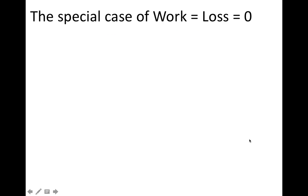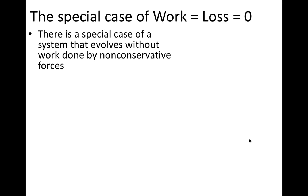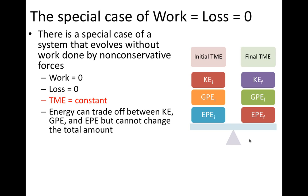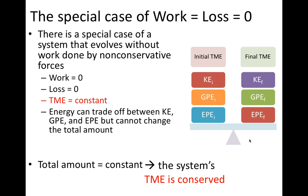In this section, we're going to look at the special case where work and loss are both zero. So in this special case where there's no energy being added and no energy being removed, the amount of energy the system starts with is going to be constant. The energy can trade between different forms, but the total amount is going to remain the same. And if the total amount is constant, we refer to that quantity — in this case, total mechanical energy — as being conserved. Conserved means the total amount stays constant.